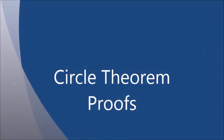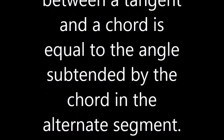Welcome to our circle theorem proofs. We want to prove that the angle between a tangent and a chord is equal to the angle subtended by the chord in the alternate segment.